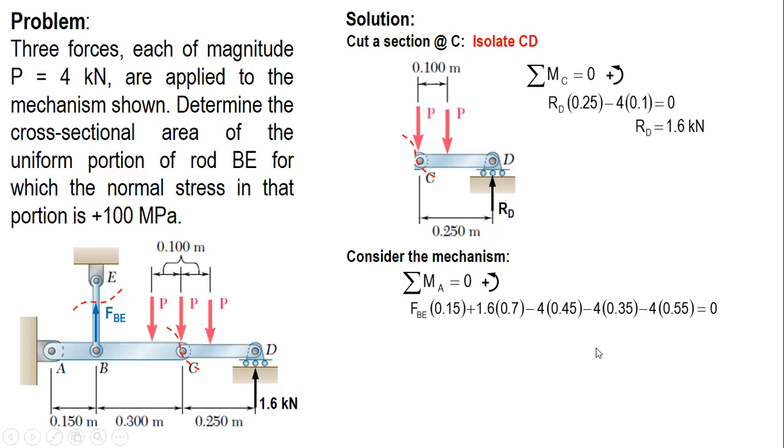So you simplify and you can solve for FBE. The value of the force in rod BE is 28.53 kilonewtons.